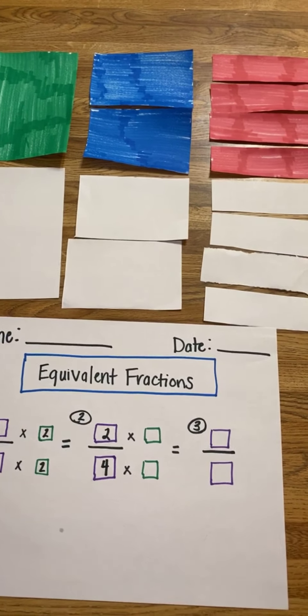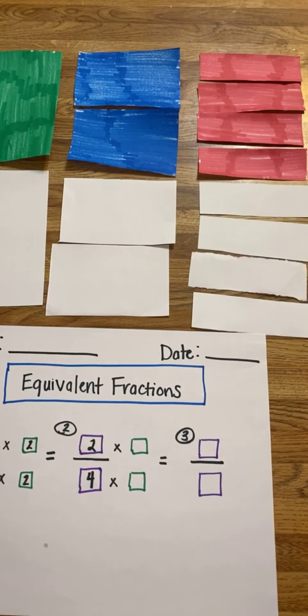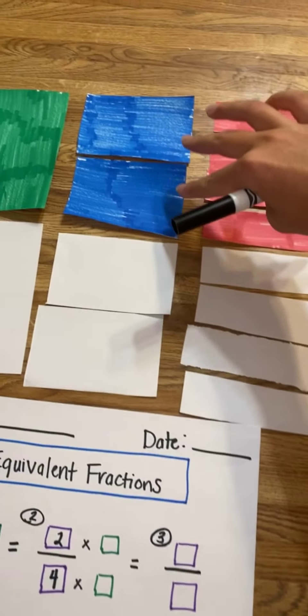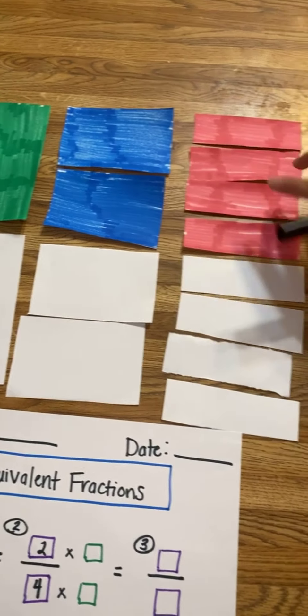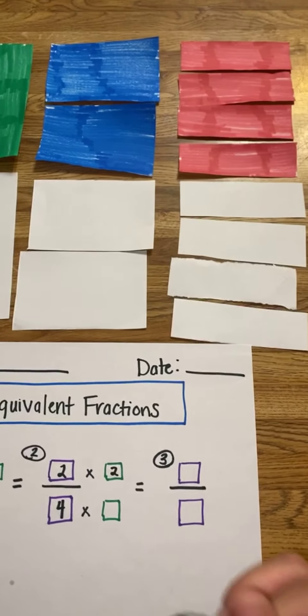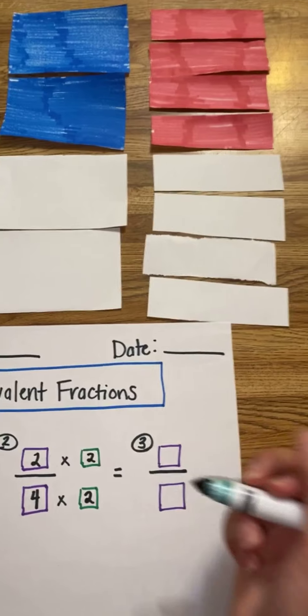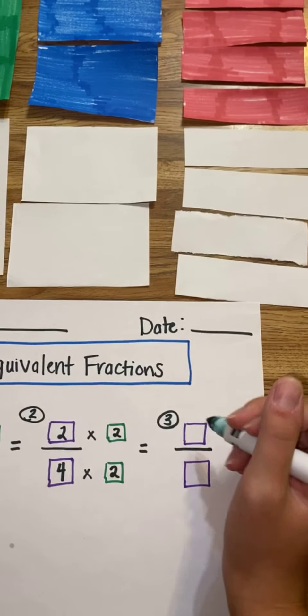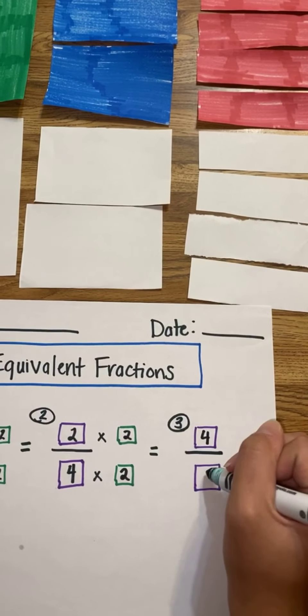Then students will know that we've multiplied by 2 again. We've taken our two total pieces times 2 to give us four new shaded pieces, and we've done the same thing with our denominator multiplied by 2. So then we get the fraction 4/8.